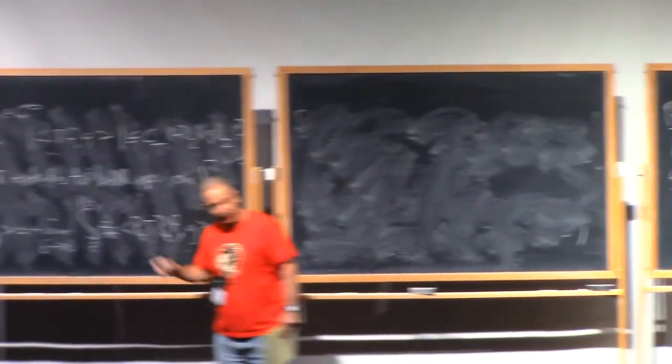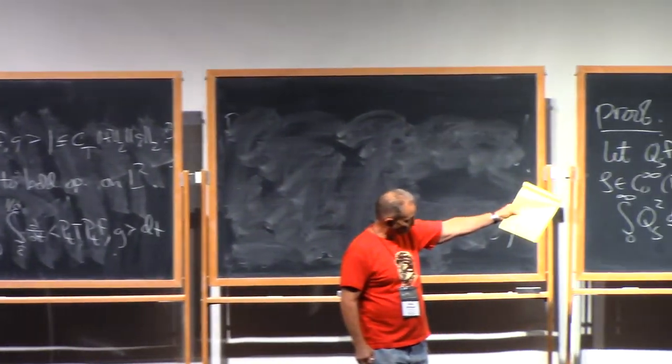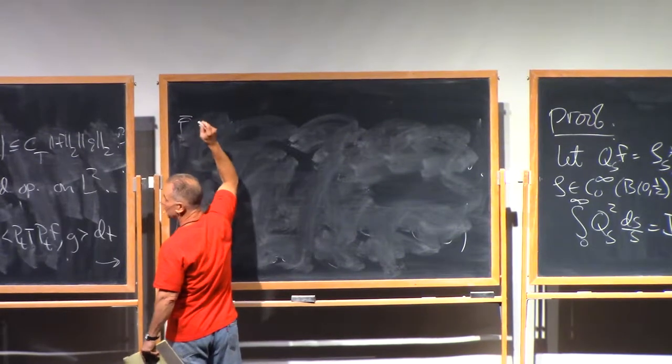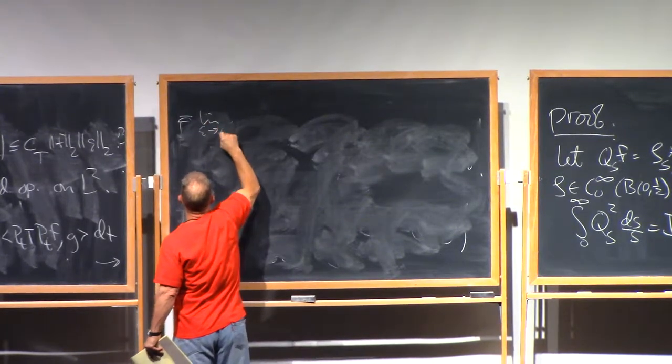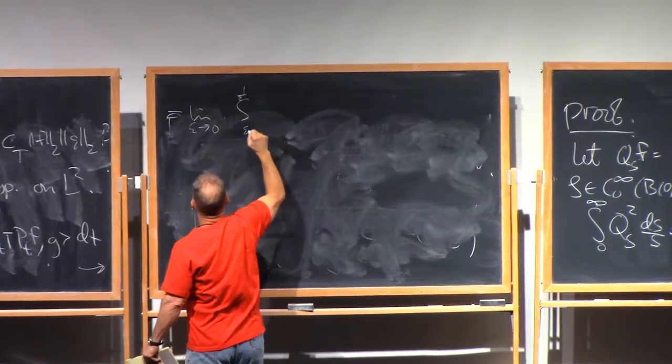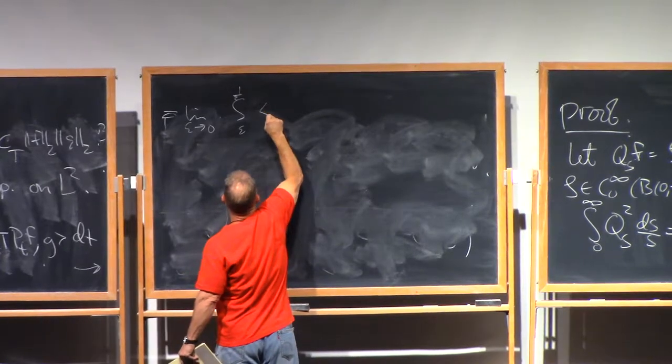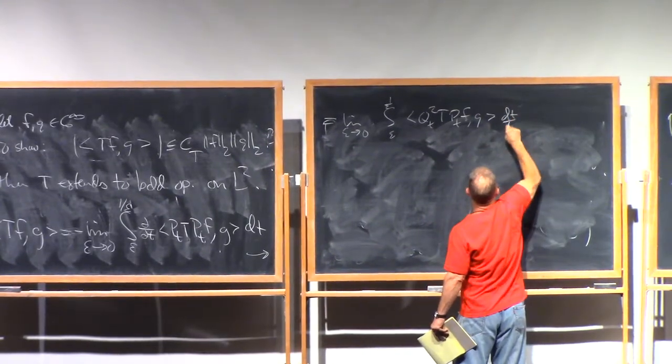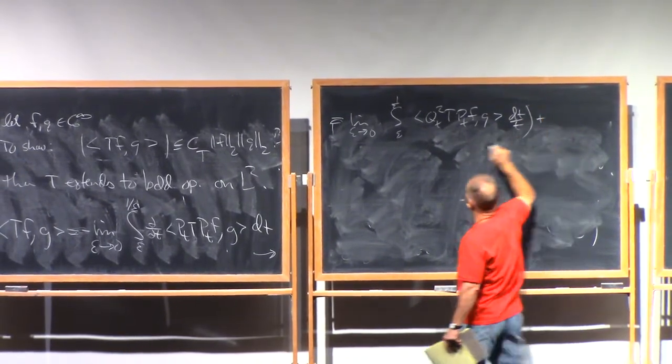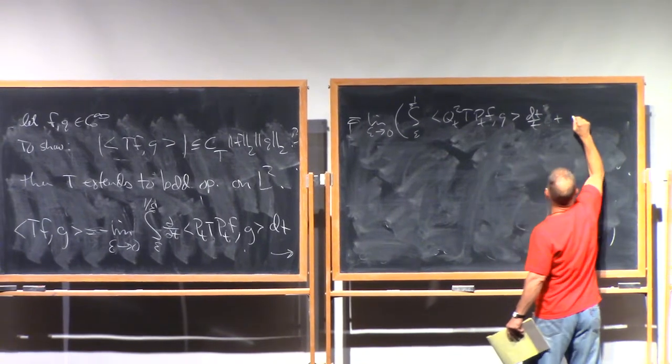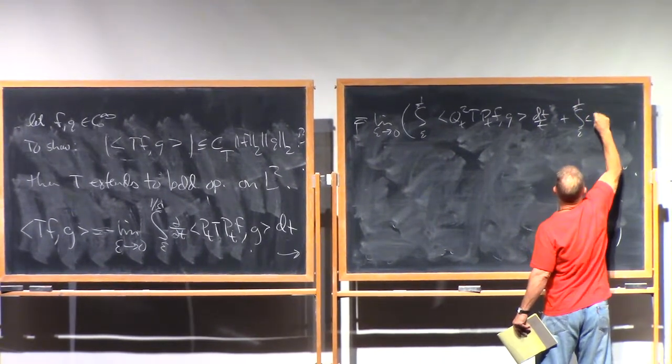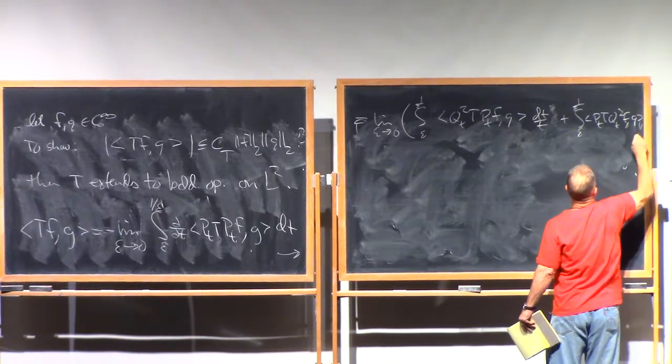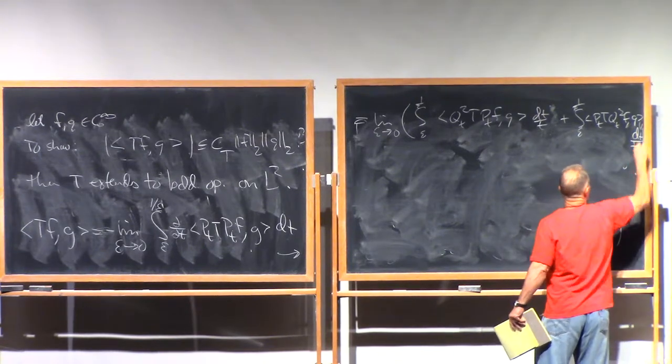So now, we take this derivative and notice what we get from differentiating this integral here. We get that this equals limit as epsilon goes to zero, integral from epsilon to 1 over epsilon, of Qt squared T Pt F paired with G, dt over T, plus the same thing, let's see, the same thing with a Pt here, T, Qt squared F paired with G. And again, the measure is dt over T.